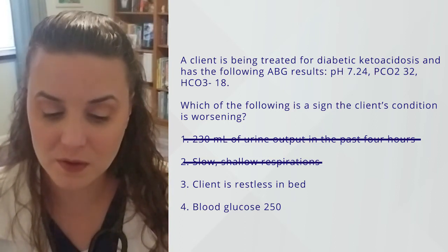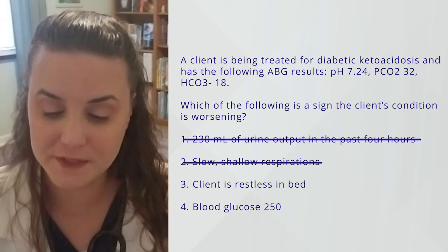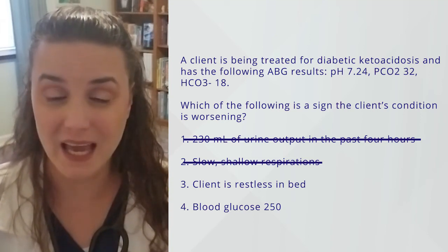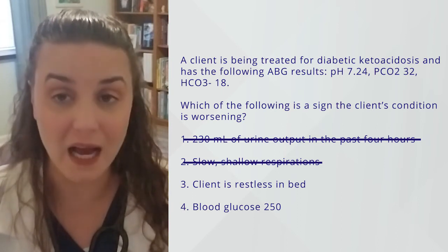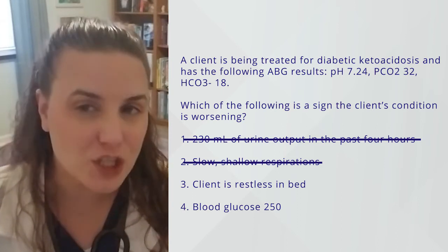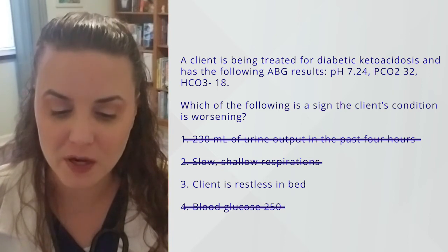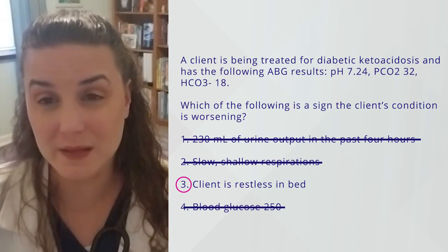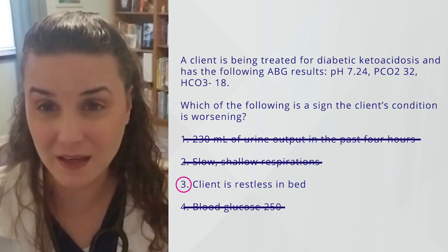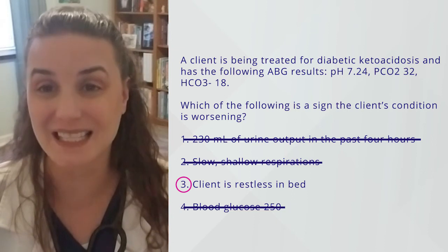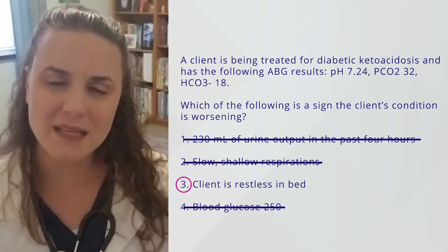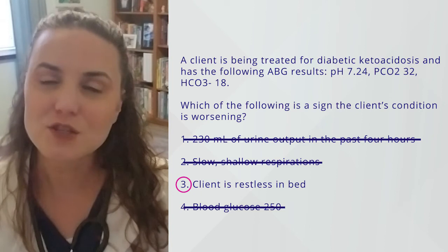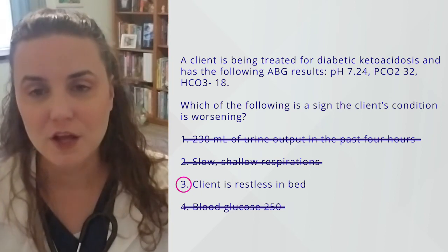I'm going to eliminate number two, because I don't know that I should expect that even if the client is getting worse. But number three — if they're suddenly more restless than before, or if they were not restless before and now they are, that's a problem. It could mean something is going on with cerebral perfusion. The blood glucose is 250 — that's pretty good if they were admitted in DKA, where we expect blood glucose to be really high. So that's actually getting better; I can eliminate number four. Restlessness is not expected and can indicate poor cerebral perfusion — that's the one I'm concerned may mean my client is getting worse. With these passing-level questions, the answer choice you want might not be there; you have to choose what is best out of what you've been given, and that requires critical thinking.